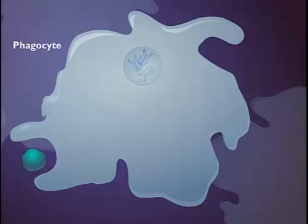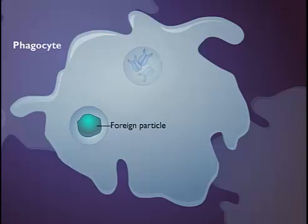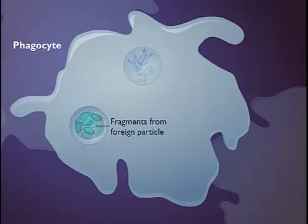A different process occurs if the antigen originates outside the cell. Phagocytes such as macrophages ingest foreign particles such as viruses and bacteria by endocytosis. The foreign particles are broken down into fragments within a vesicle.